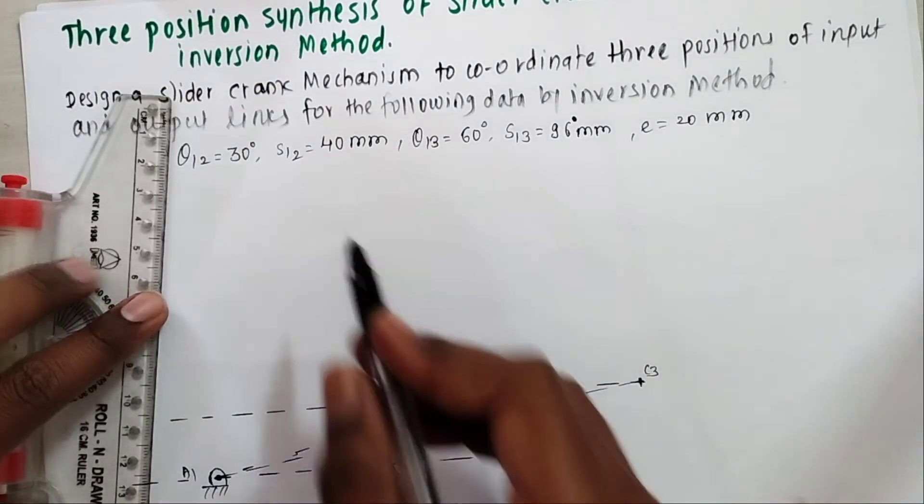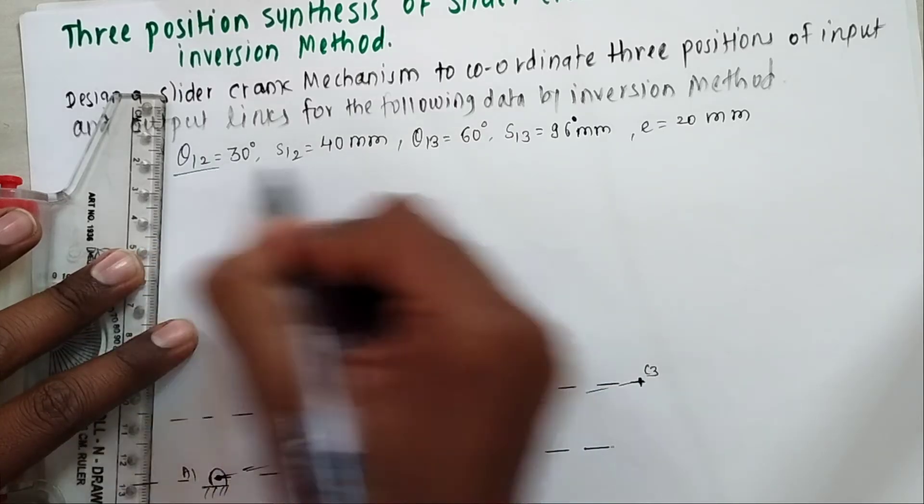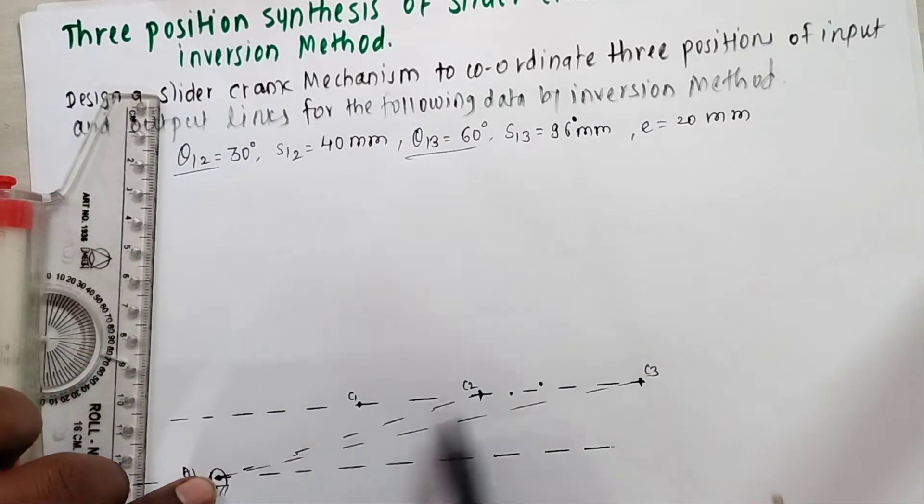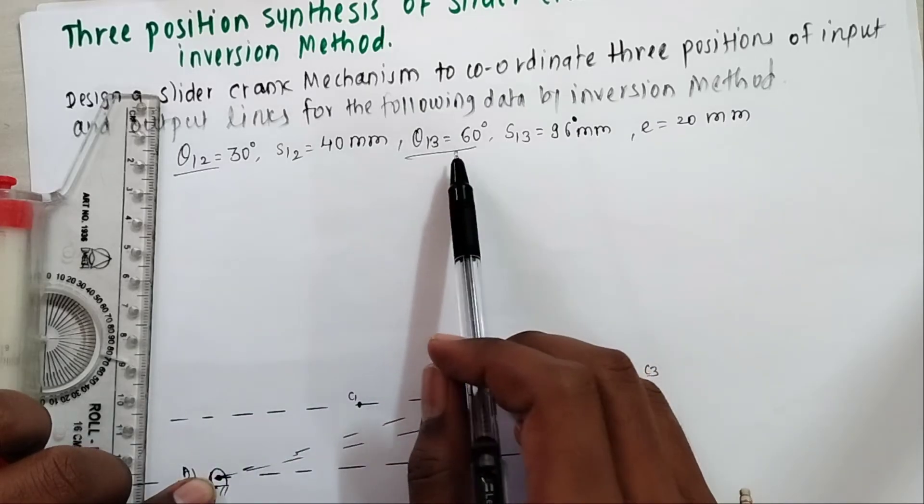As distance or angle θ12 and θ13 is known to you, now we have to mark this angle θ12 from A1C2 and θ13 from A1C3. θ12 is 30 degree and θ13 is 60 degree.